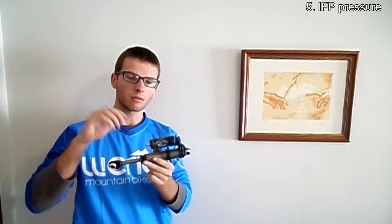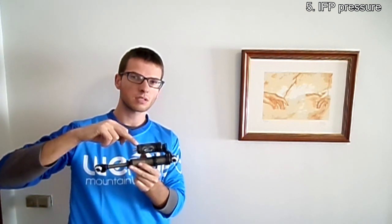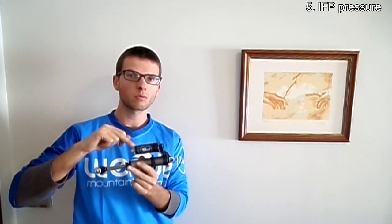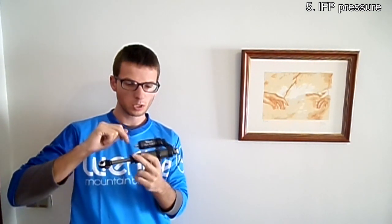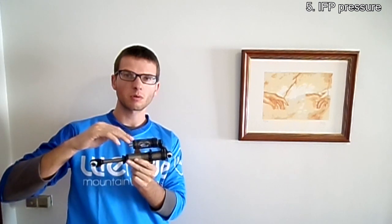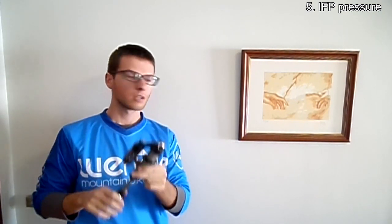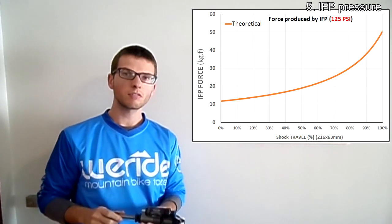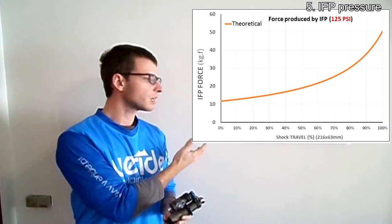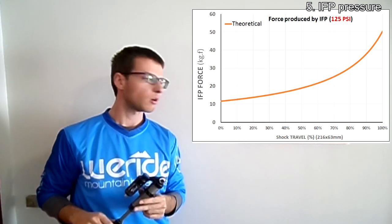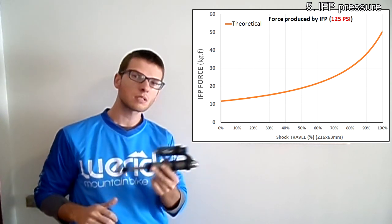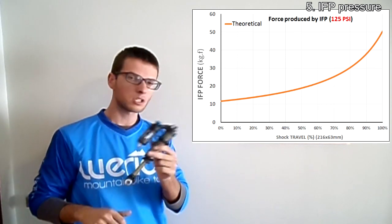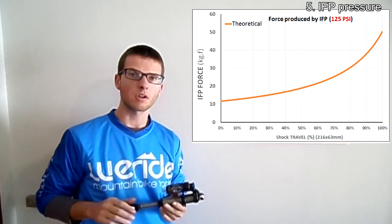As a final curiosity, I have been using 200 PSI boost valve pressure. Now I will use 125 PSI, which is the minimum pressure recommended for this shock. According to the theoretical graphs, with 125 PSI I should get a breakaway force of 12 kilograms instead of the 20 kilograms seen previously. Let's check if that is true.